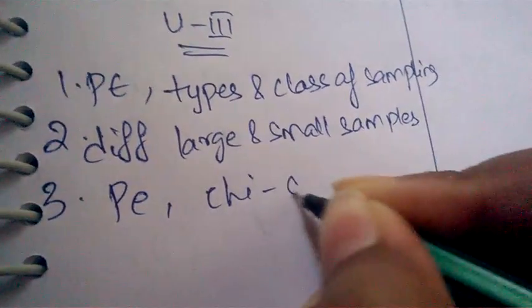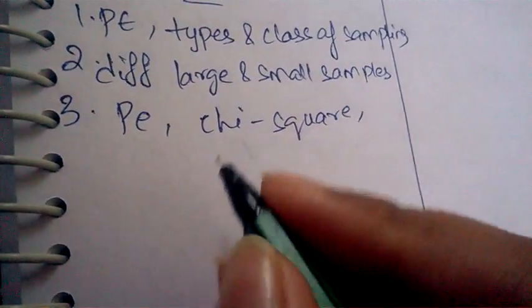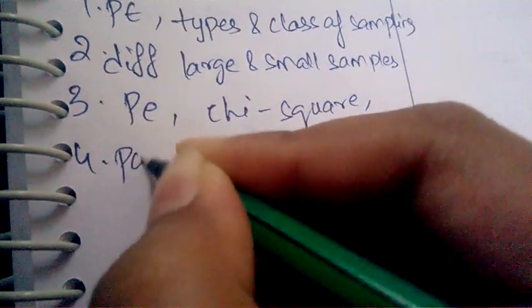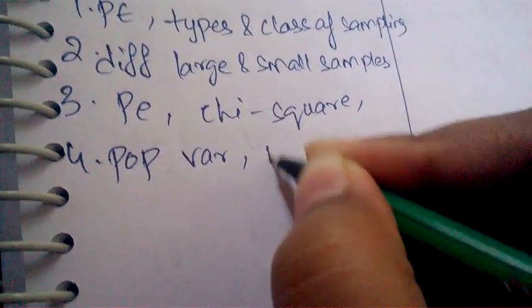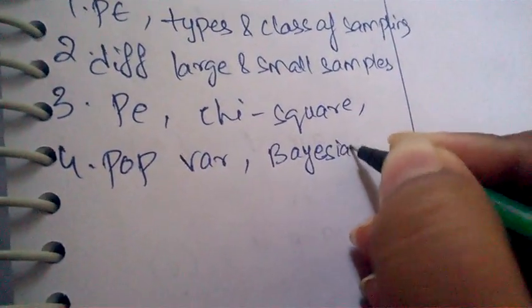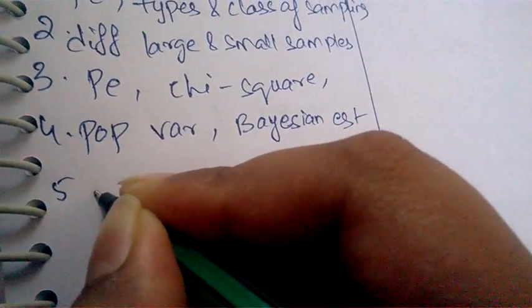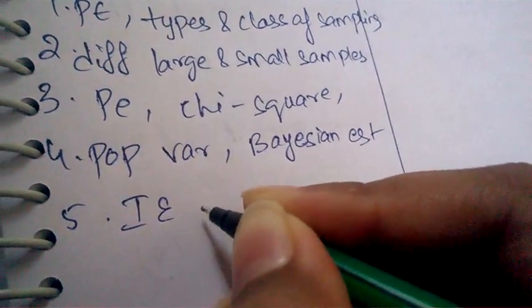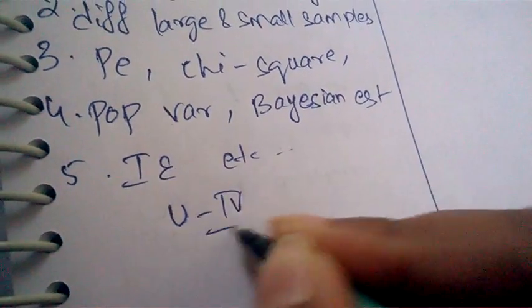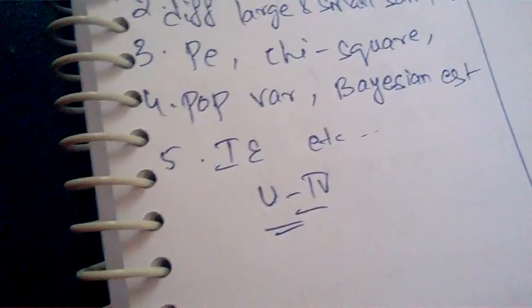What is Chi-square? What is population variance? Population variance, estimation, and what is interval estimation.